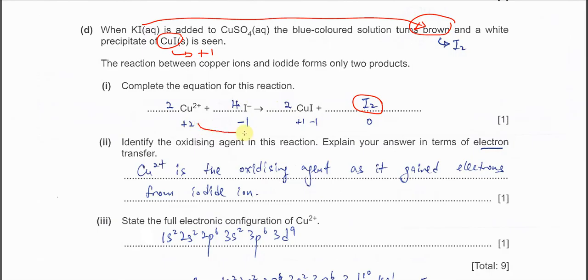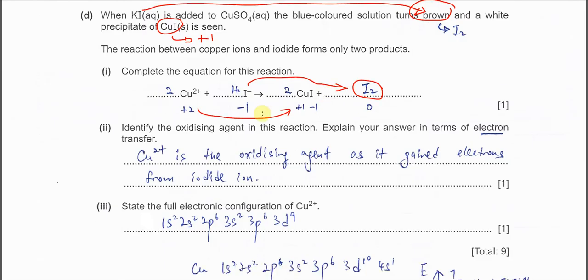So here we know that copper two now reduced to this copper one. Iodide now oxidized to the iodine. So this is a redox reaction. Identify the oxidizing agent in this reaction. Oxidizing agent is the one that oxidizes others itself get reduced. So which species get reduced? Copper two get reduced from copper one. So it's quite clear that copper two is the oxidizing agent. And you must explain in terms of electron transfer. Do not just give the copper two. You must explain why. So because copper two it gains one electron from iodine. Copper two it changed from positive two to positive one because it gains one electron.